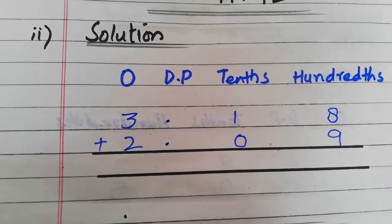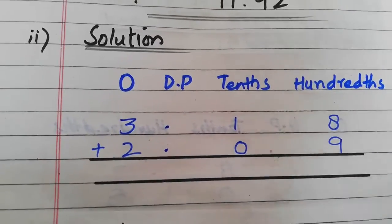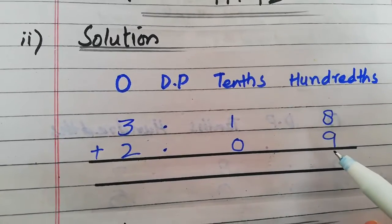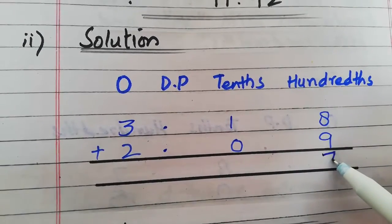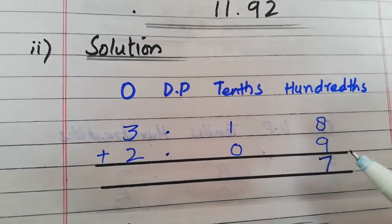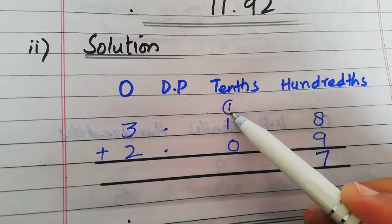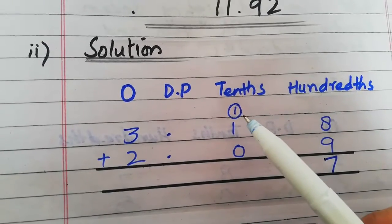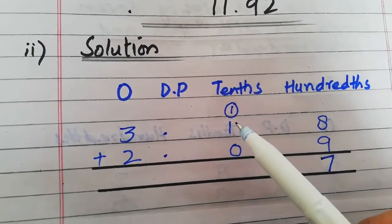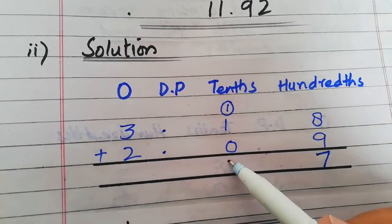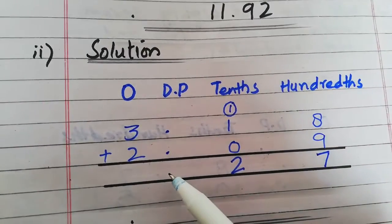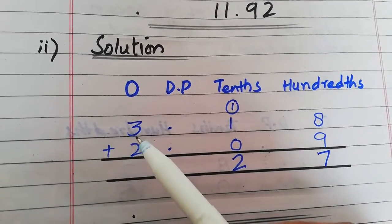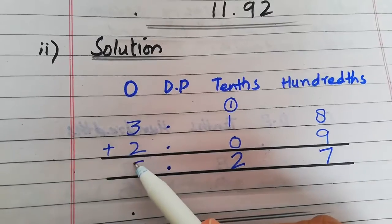پہلے hundredths column add کریں گے: eight plus nine is equal to seventeen۔ Seven hundredths میں رکھیں گے اور one carry ہو جائے گا tenths میں۔ Tenths column: one plus one plus zero is equal to two۔ پھر decimal point لگائیں گے۔ Ones column: three plus two is equal to five.